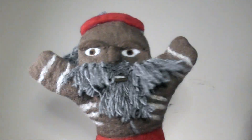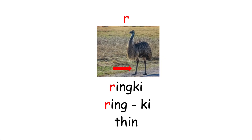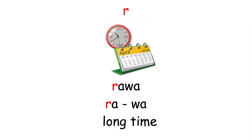Let's have a look at some examples of this sound in the Nganijara language. 'Ringi' means thin — ringi. 'Rawa' is a long time — rawa.